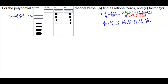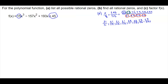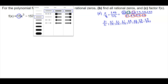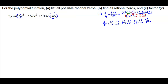Now we're going to take plus or minus 5. So we have plus or minus 5 divided by plus or minus 1, plus or minus 5 divided by plus or minus 3, plus or minus 5 divided by plus or minus 5, and plus or minus 5 divided by plus or minus 15.